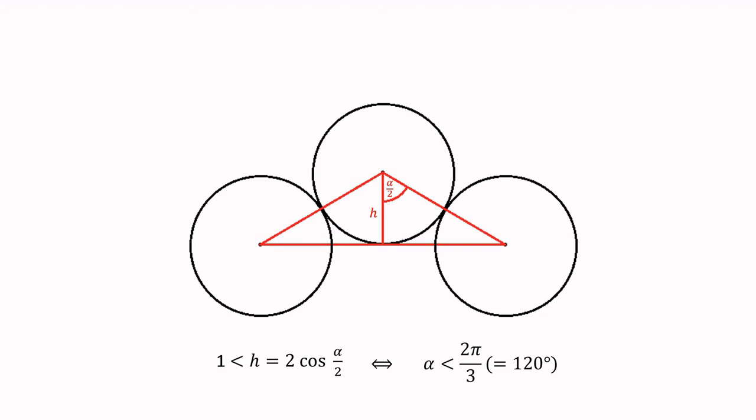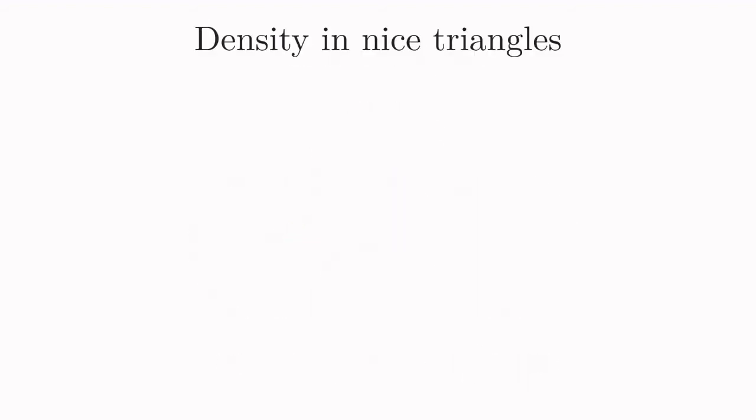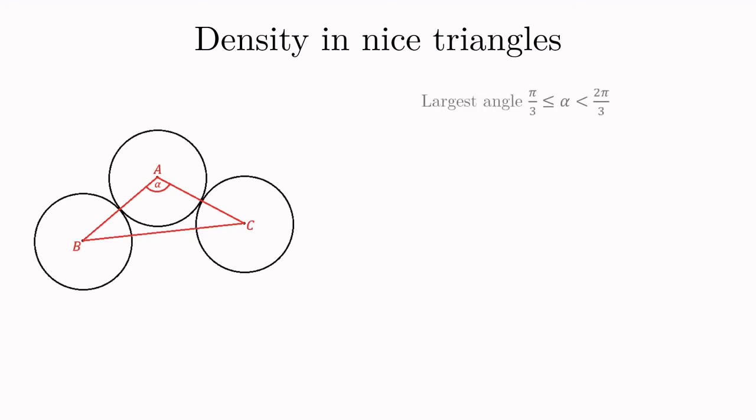Let's just call the triangle with this property nice. Now what can we say about the density of a packing inside a nice triangle like the one on the left? Nice means that the largest angle alpha is less than 2 pi thirds and the largest angle of any triangle is always at least pi thirds. As seen before we can conclude that the yellow area is exactly the area of a half circle or pi over 2.